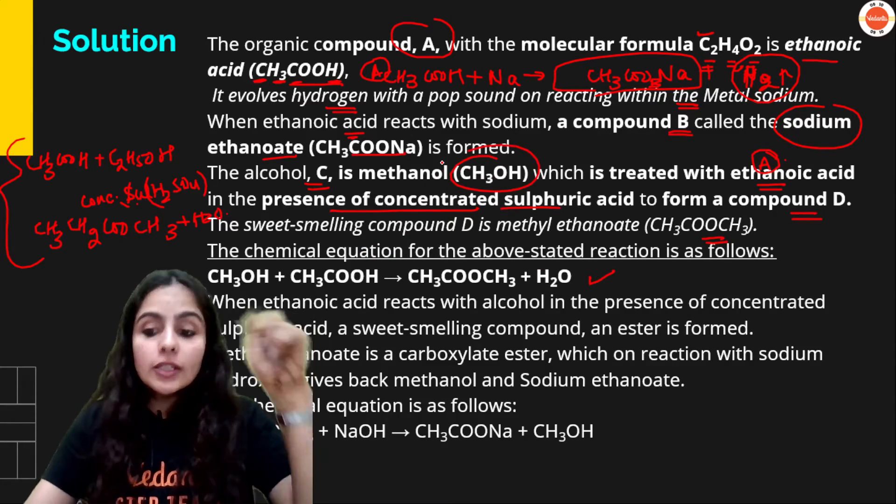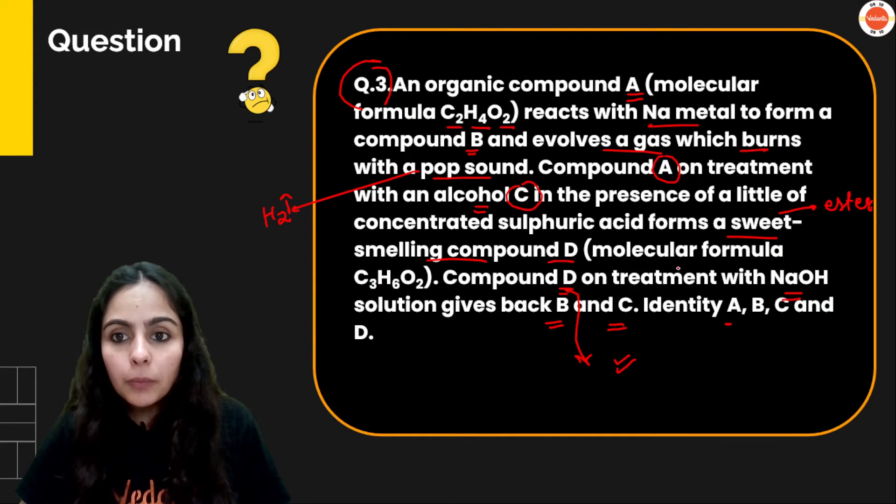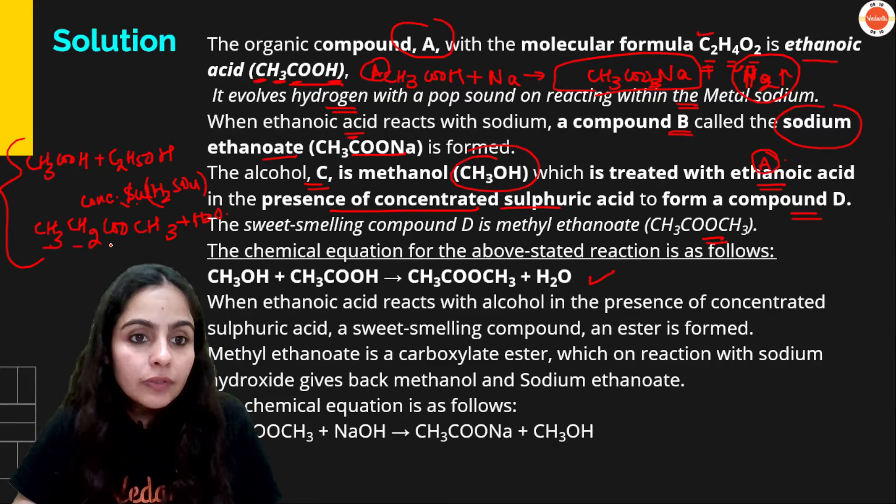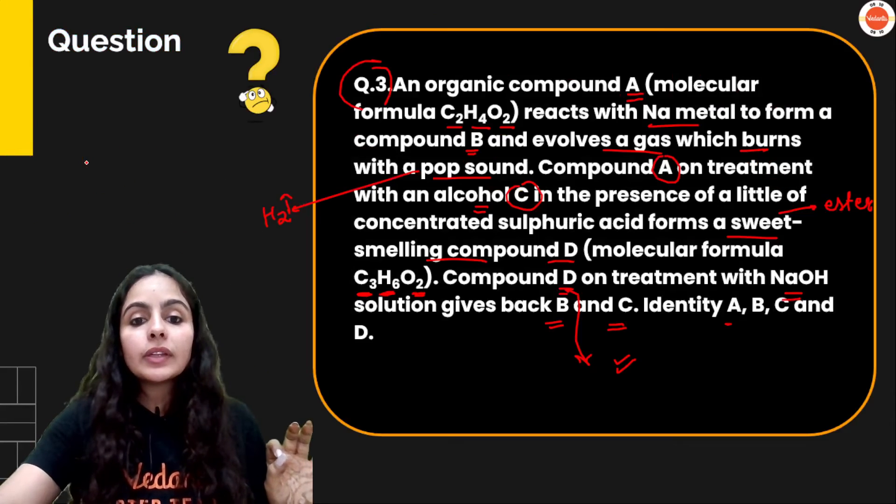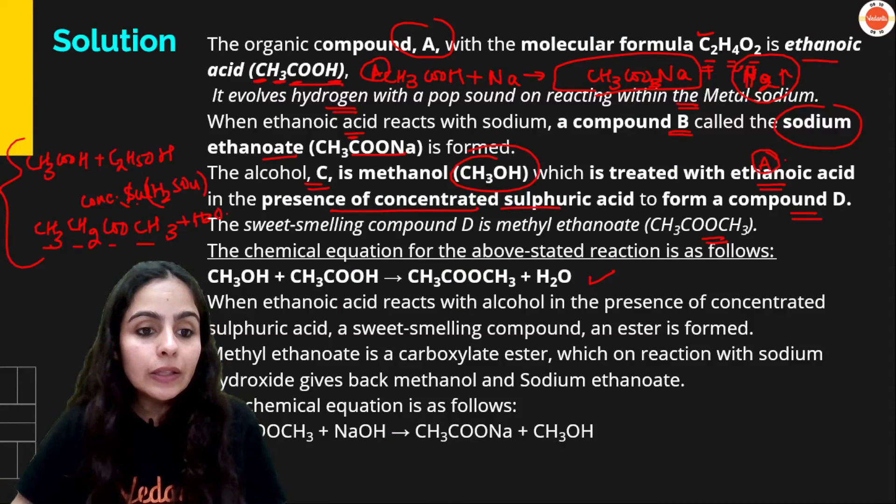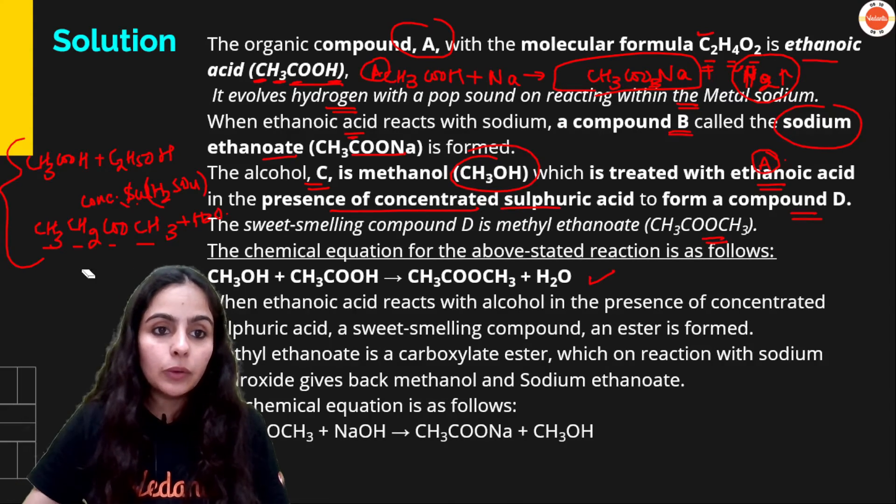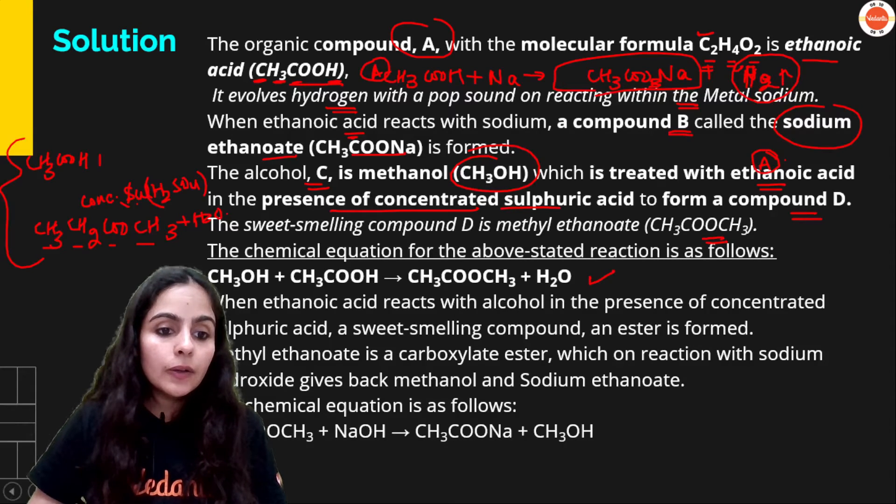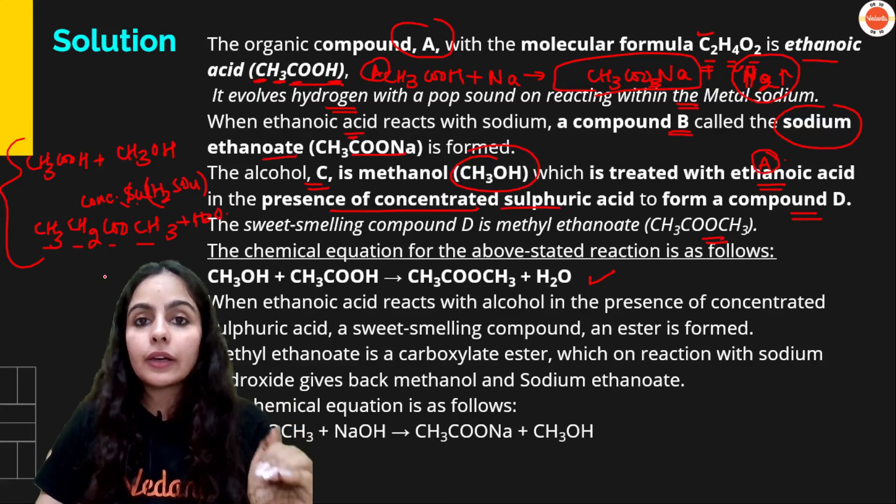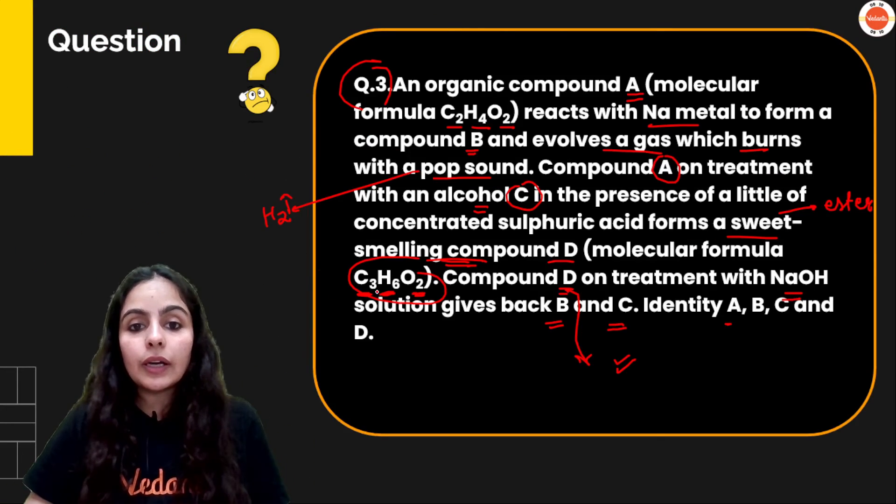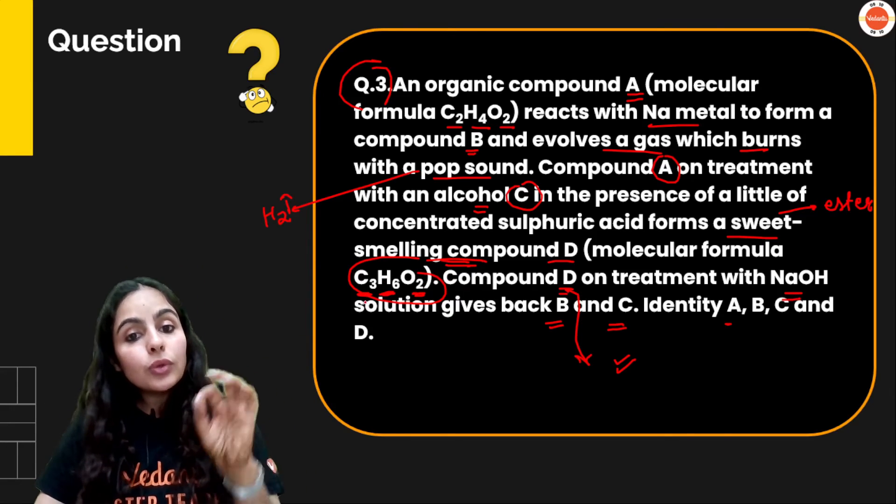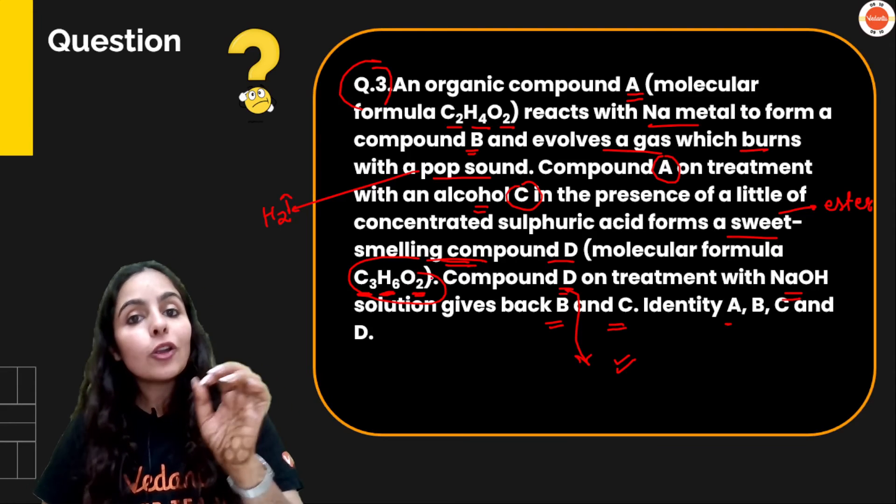Alcohol is methanol. Question kya diya hai? Molecular formula. See, molecular formula C3H6O2 hai na? Yahap per aapko jo molecular formula diya hai ester ka, wo hai teen carbon ka compound. So definitely hum log ethanol nahi le sakte. Hameh methanol lena padega. That's a twist here. Agar chaar carbon ka hota na ester, toh aap ethanol ko ethanoic acid ke saath karate. Otherwise, kyunki yaha pe carbon kam hai, toh hameh methanol lena padega along with ethanoic acid.